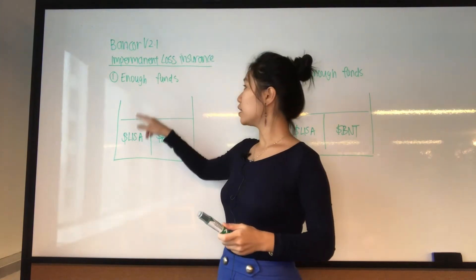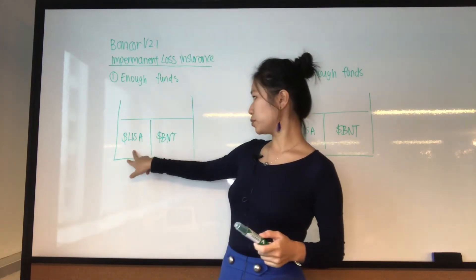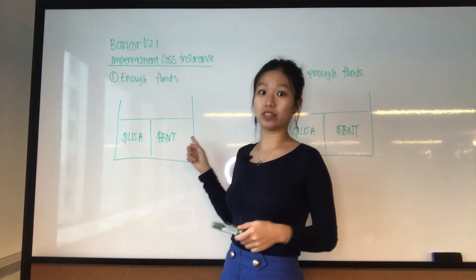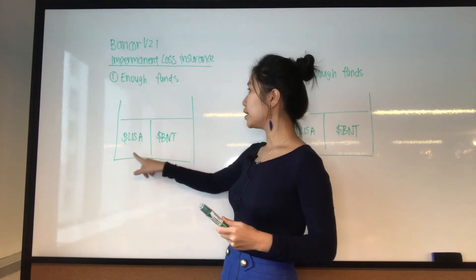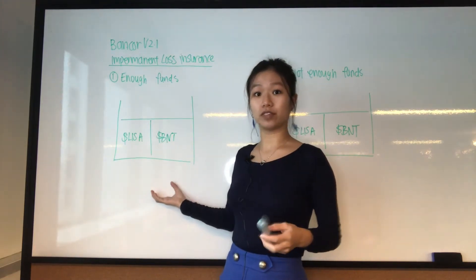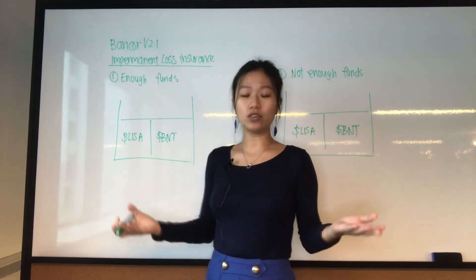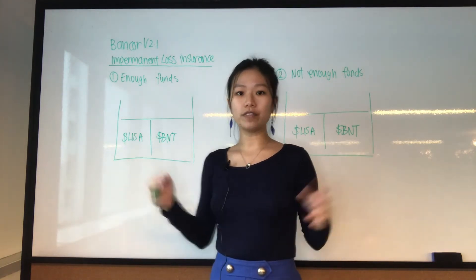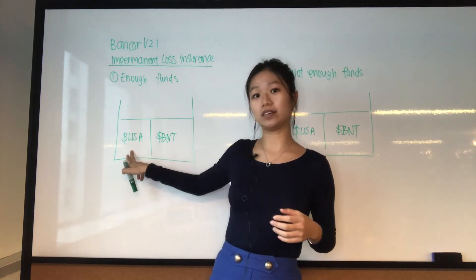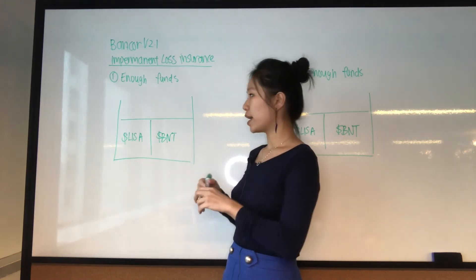How does the liquidity pool have enough funds? In the liquidity pool, we have two types of tokens — for example, the LISA token and the BNT, which is the Bancor token. The main difference between what Bancor version 2.1 is doing against all the other liquidity pools out there, like Uniswap or Balancer or Cov, is that you could always add single-sided liquidity.